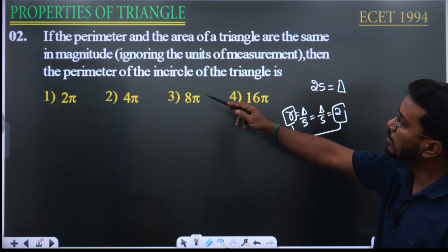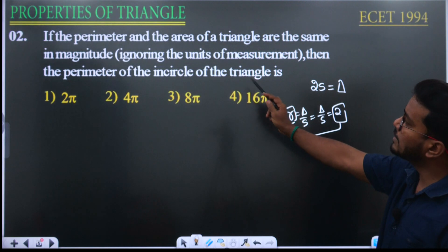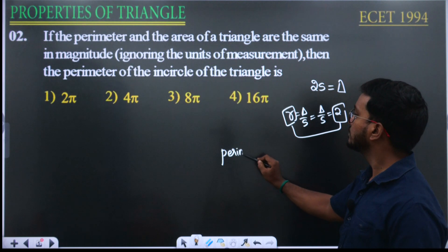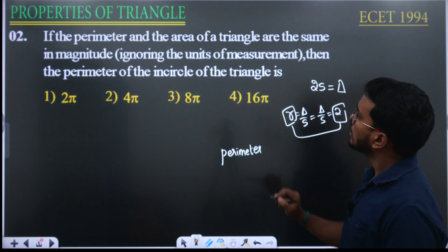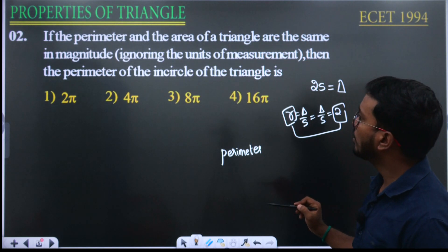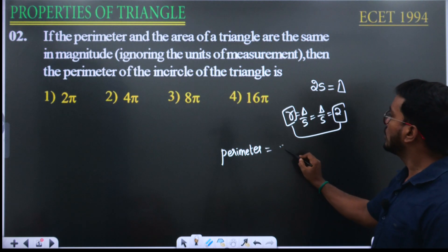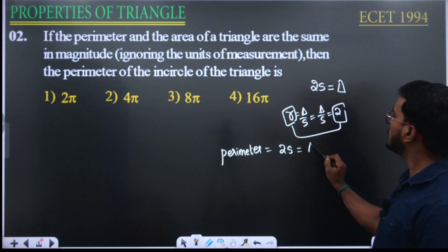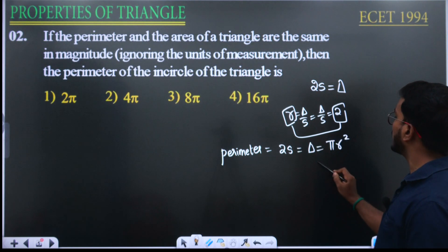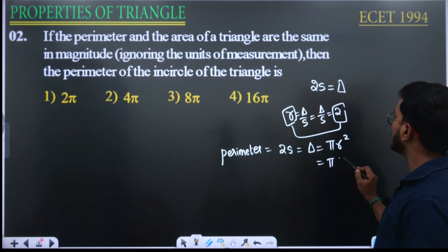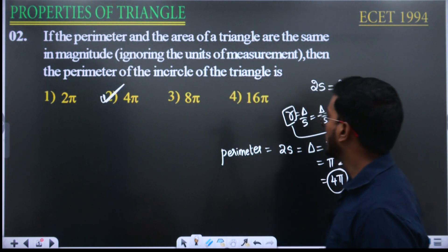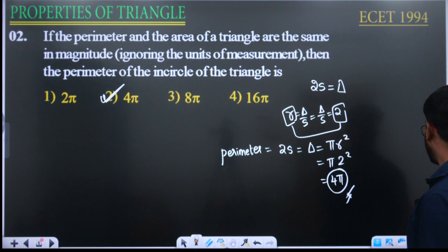The question asks for the perimeter of the in-circle of the triangle. Perimeter of a circle is 2πr, so it is 2π times 2 equals 4π. Alternatively, since delta equals π r squared equals π times 2 squared equals 4π. So the answer is 4π. Pause the video, note it down.